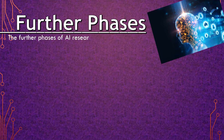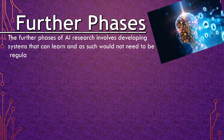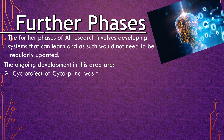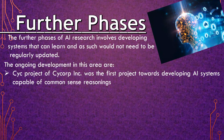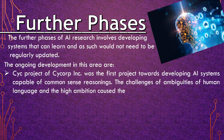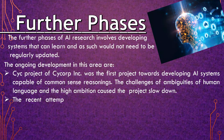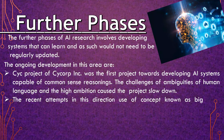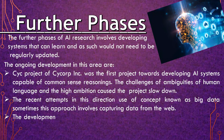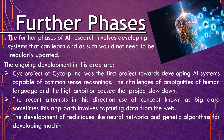Further phases of AI research involve developing systems that can learn and would not need to be regularly updated. Ongoing developments include the CYC project of Cycorp Inc., which was the first project towards developing AI systems capable of common-sense reasoning. The challenges of ambiguities in human language and high ambition caused the project to slow down. Recent attempts use a concept known as Big Data, sometimes capturing data from the web, and the development of techniques like neural networks and genetic algorithms for machine learning.